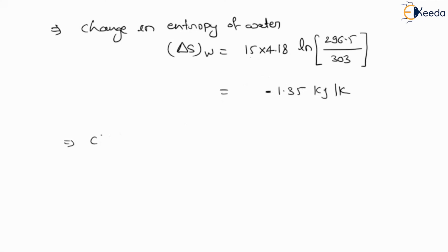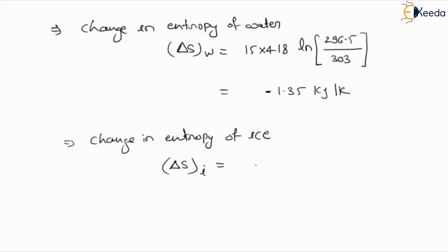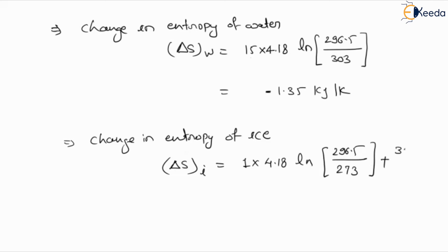Now we determine the change in entropy of ice, ΔS_I. It will be mass 1 × Cp 4.18 × ln(296.5 / 273) plus the latent heat contribution: 333.5 / 273. The final value of ΔS for ice is 1.56 kJ per Kelvin.